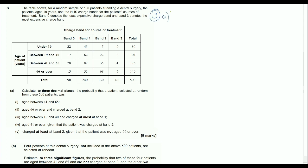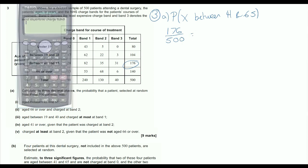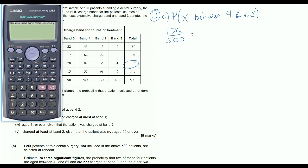So for 3a, what is the probability that a randomly selected patient is between 41 and 65? So we're going to think about all of the people who are in that age band, 41 to 65. So we've got 176, and we are calculating the probability that a patient is taken at random from the 500. So I'm going to use my normal calculator here, just putting in the fraction as it is, 176 over 500.